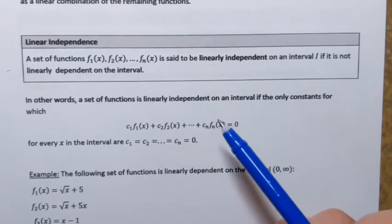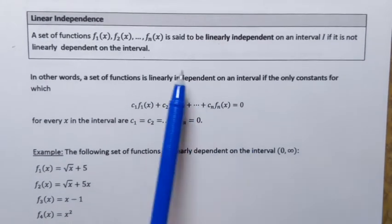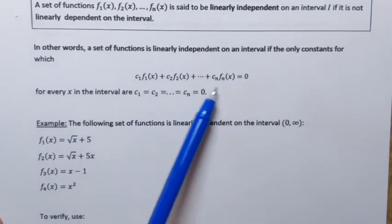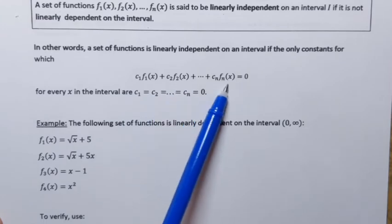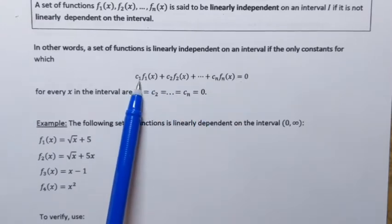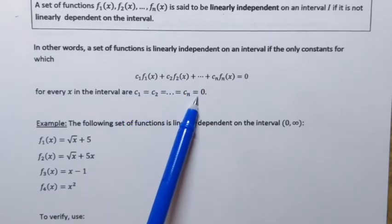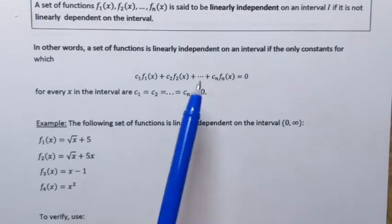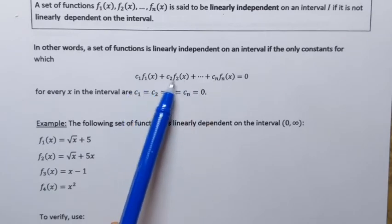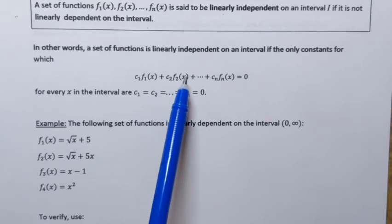We can also define linear independence this way: a set of functions is linearly independent only if the equation c1·f1(x) + c2·f2(x) + ... + cn·fn(x) = 0 holds only in the case when c1, c2, c3, up to cn are all zeros. If that's the only way to make this equation true and we cannot find any other non-zero c values, then the set of functions is linearly independent.